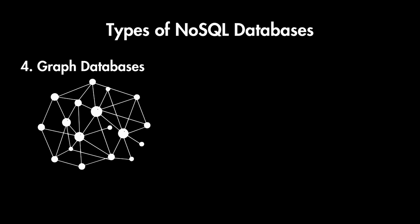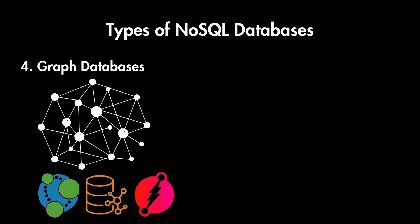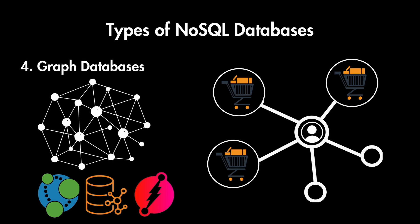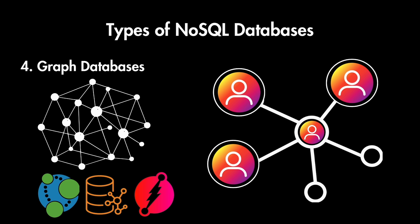The last common type is graph databases. These databases focus on storing entities as nodes and their relationships as edges, forming graph structures. Both nodes and edges can have properties. Examples include Neo4j, Amazon's Neptune service, and DGraph. Amazon uses its Neptune graph database service for product recommendations — you've probably seen 'customers who bought this also bought' suggestions. Meta also primarily relies on a graph database called TAO, which is internally developed for representing and analyzing connections between people, such as connections between Instagram and Facebook profiles. Graph databases are effective for storing and querying complex relationships.